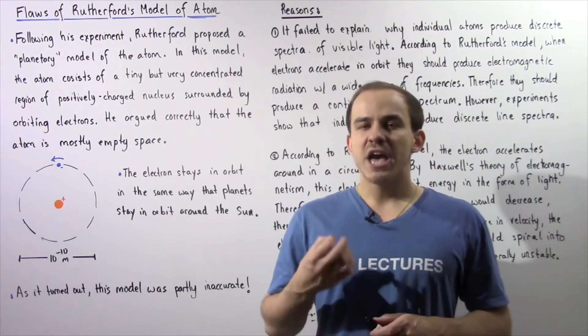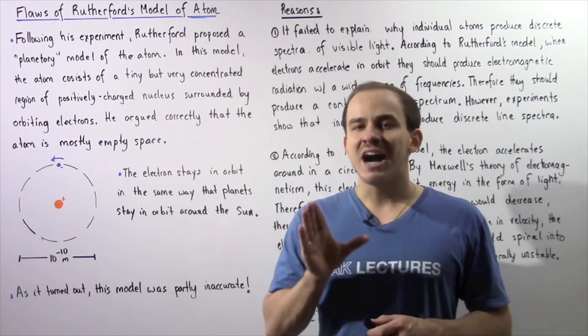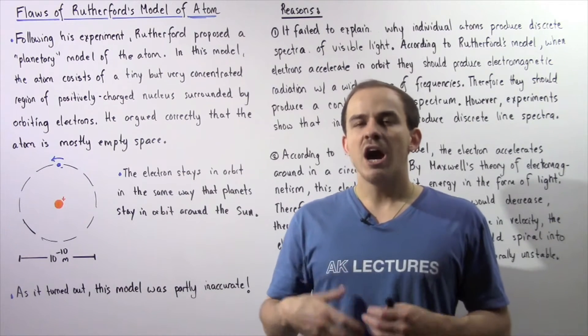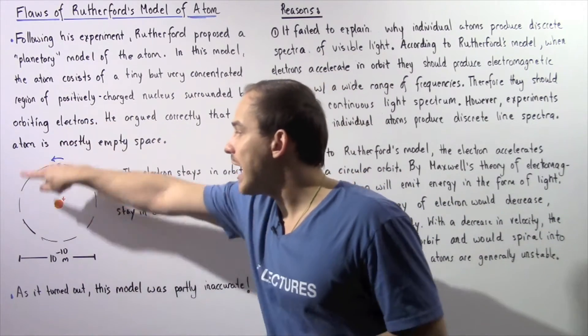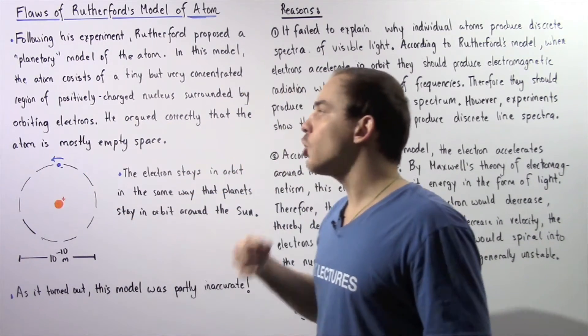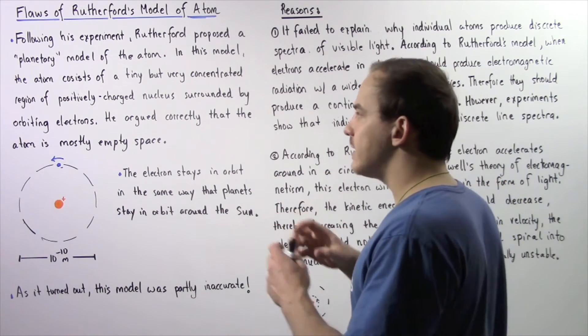Now in this model, the atom basically consists of a very tiny but concentrated region of positive charge that became known as the nucleus, and surrounding this nucleus are orbiting electrons which essentially have a negative charge.